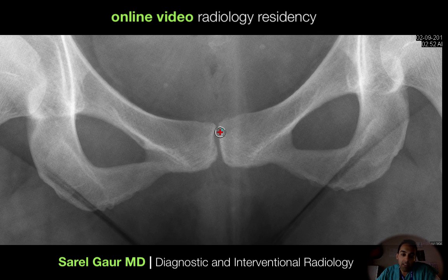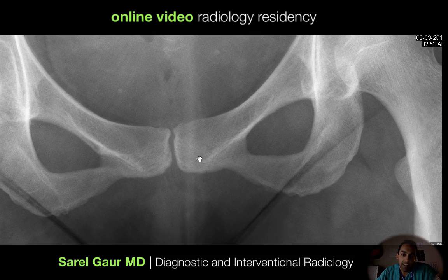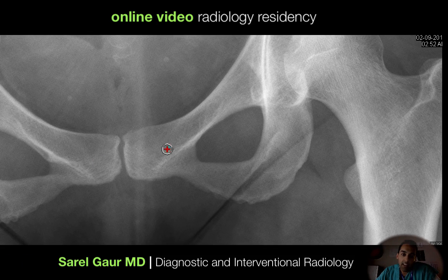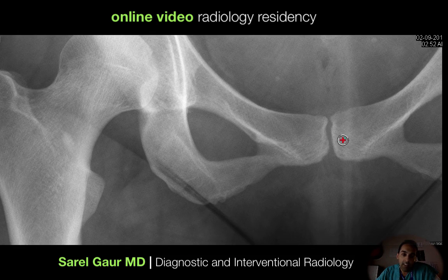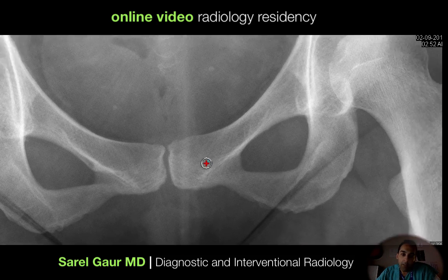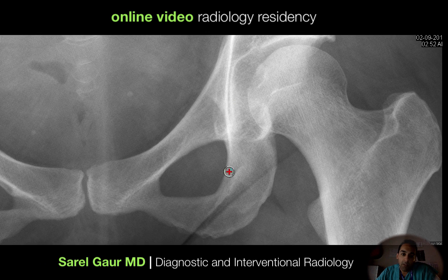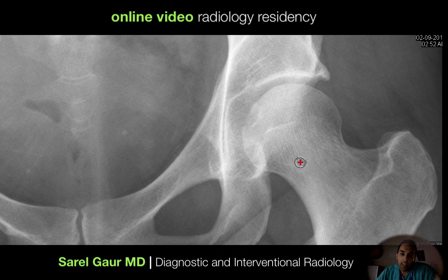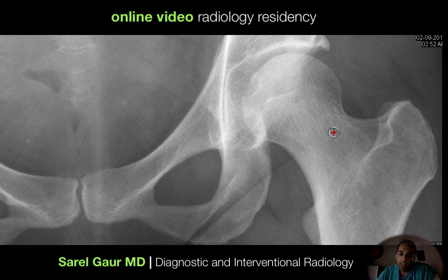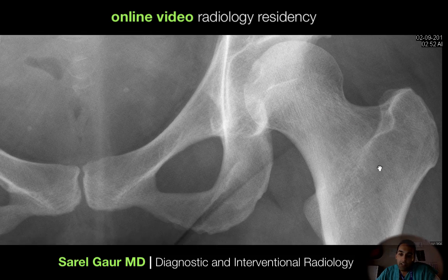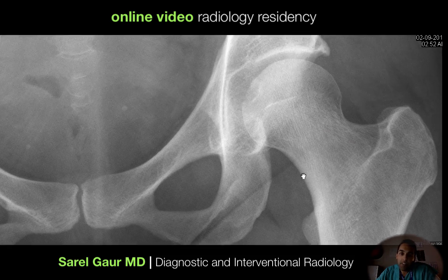Moving on from the pubic rami, I come to the symphysis pubis. In traumatic injury, I can have widening of the symphysis, so I'm looking for that. Then I do the same thing on the left side — going through the superior and inferior pubic ramus, the ischium, looking at the femoral head, femoral neck, the intertrochanteric region, and the subtrochanteric region.